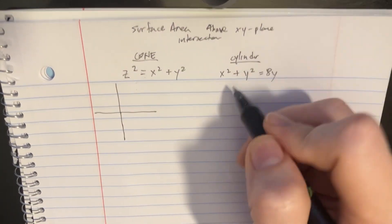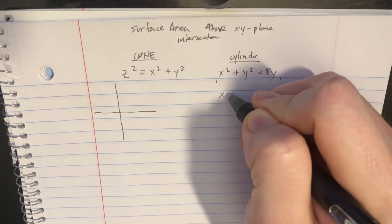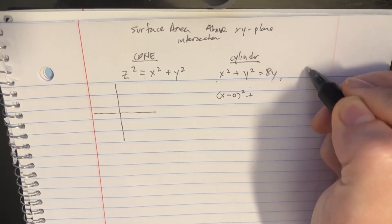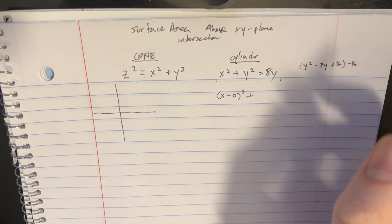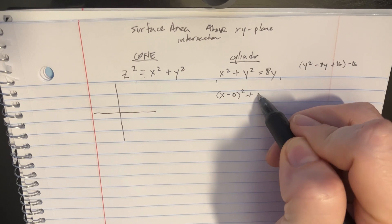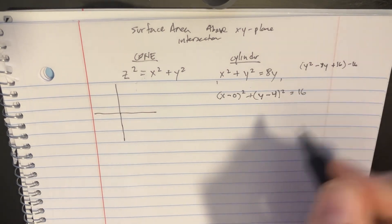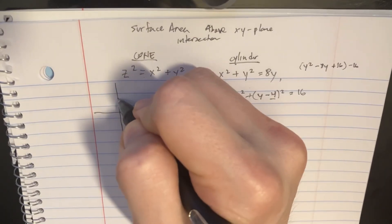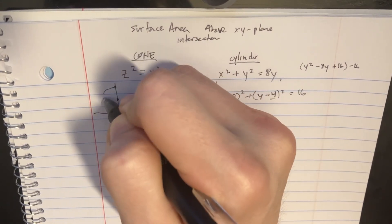Let's focus on the cylinder first and rearrange this equation a little bit. We'll go x minus 0 squared, and over here y squared minus 8y, and if we want to complete the square we're going to need a plus 16 and a minus 16. That way we can say y minus 4 squared equals 16. We've got the equation for a cylinder — you can see that (0, 4) is the center and the radius is going to be 4.